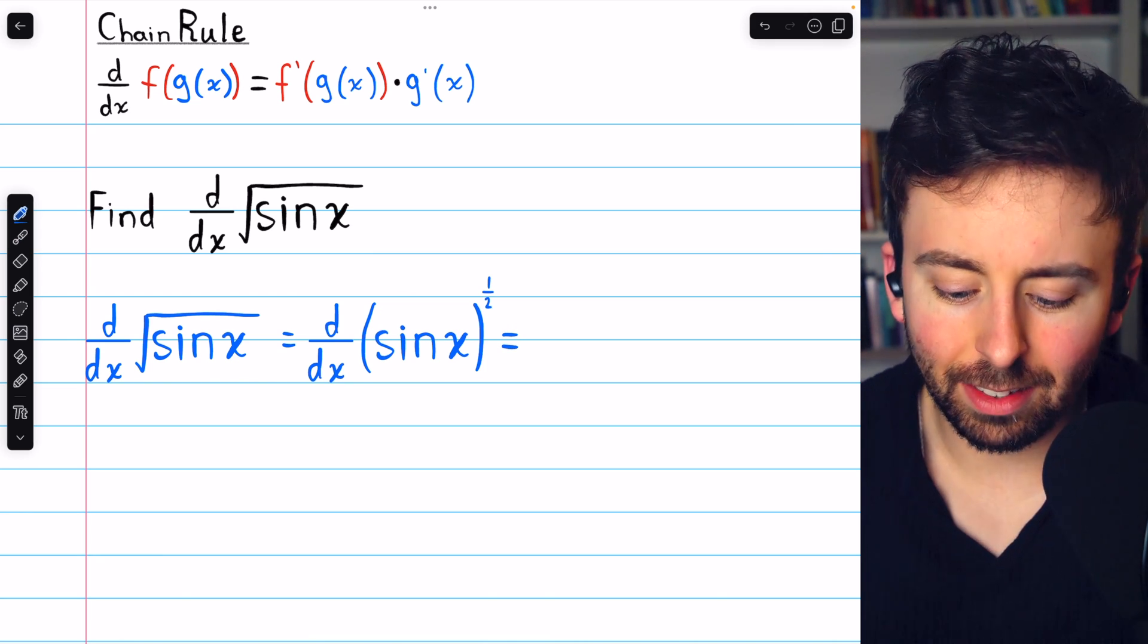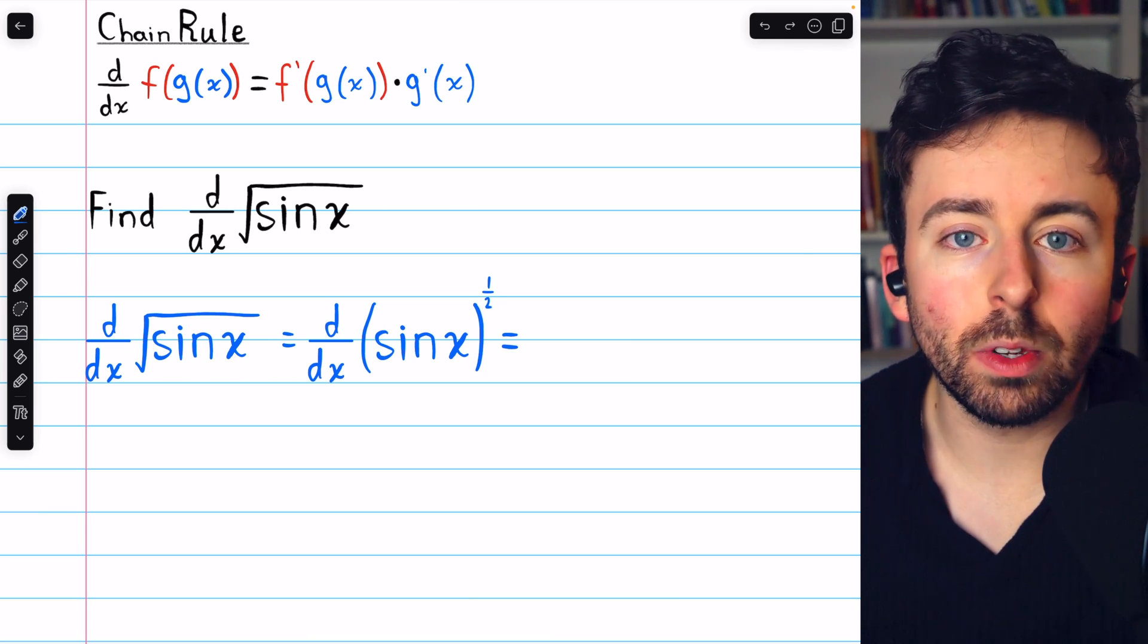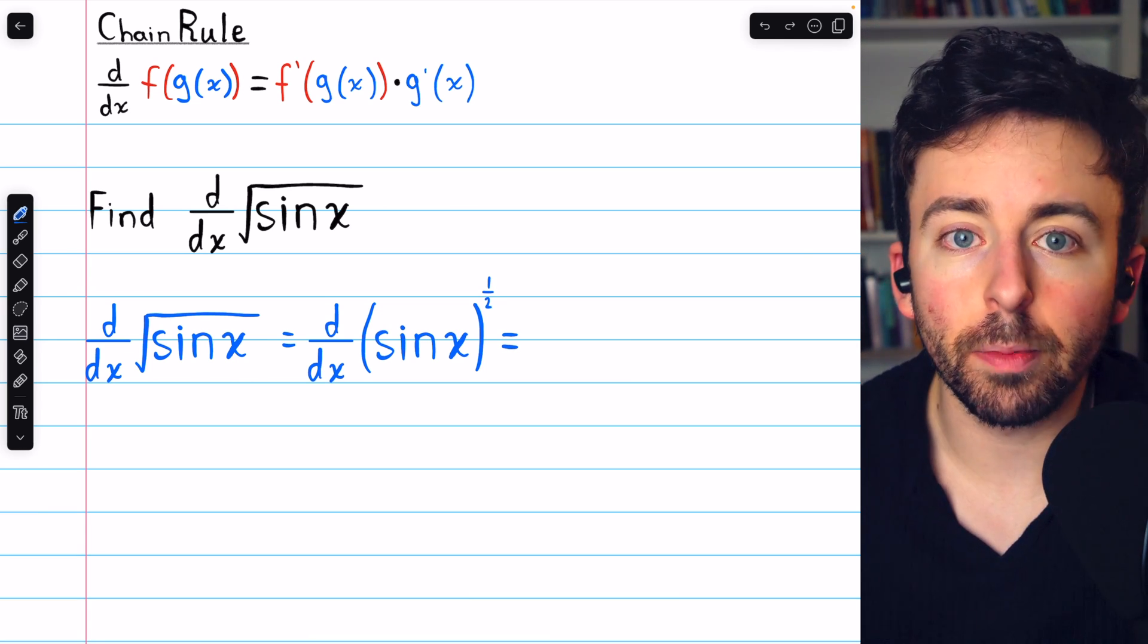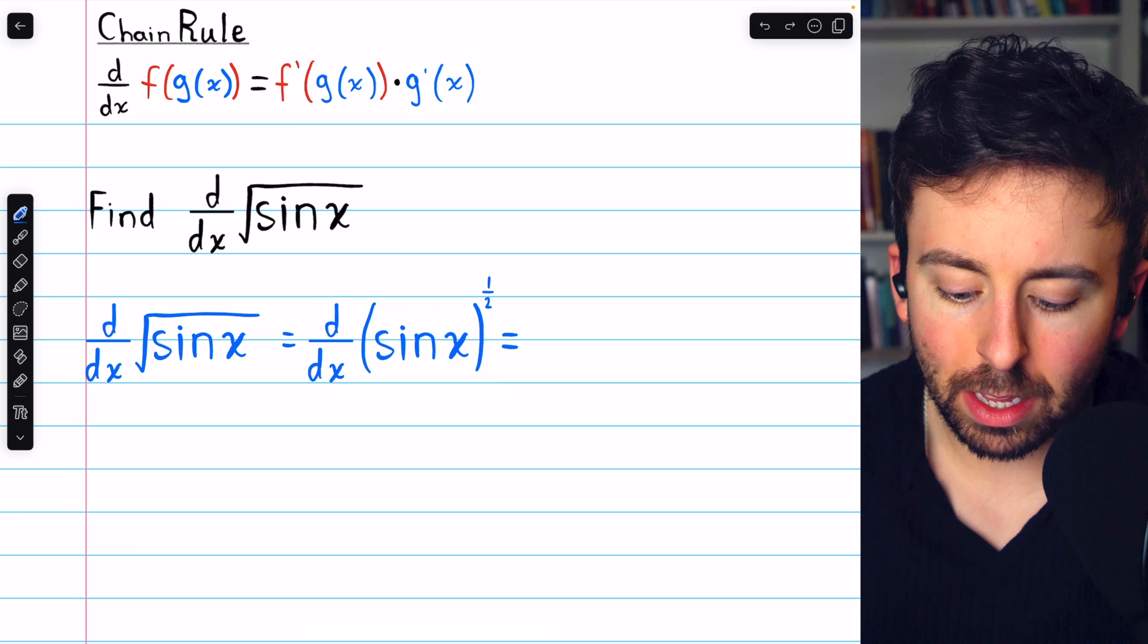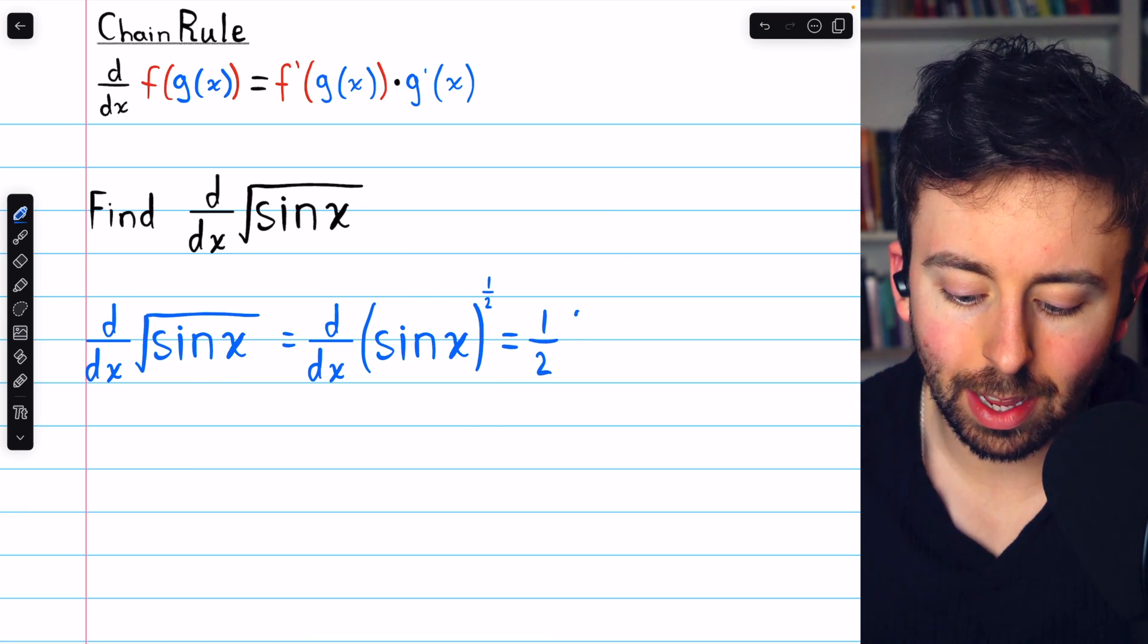The outside function, again, is the square root, or that power of one-half. The way you take the derivative of something to the power of one-half is by using the power rule. So the power of one-half comes down as a factor.